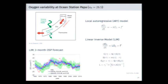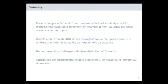To summarize: the forced changes are a result of combined respiration and solubility effects — mostly respiration. The models tend to agree to leading order in the extratropics but disagree in the tropics. Models are significantly underestimating the respiration-driven component. Natural variability is really important in the context of thinking about variability and change. And we are developing the capacity to actually predict oxygen on interannual to decadal timescales.